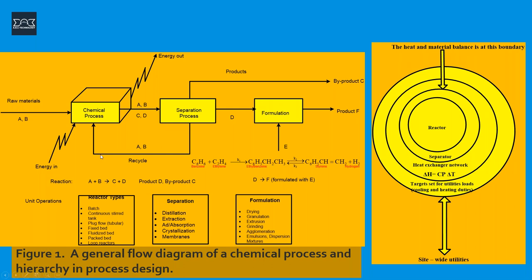In the chemical process, chemical reactions take place in reactors such as batch, continuous stirred tank, plug flow, fixed bed, fluidized bed, loop reactors, and so on. This involves a heat input into the chemical process. If the reaction requires heat, the thermodynamics of that reaction is endothermic. However, if heat is taken out, the reaction is exothermic, and we need to be cautious about how we control the process in terms of temperature or pressure.